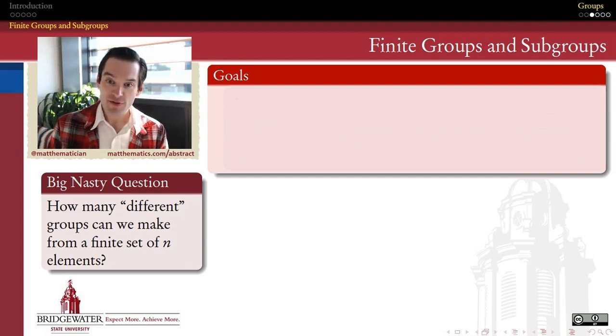And the second question is, if it's true that I can do that, how many different ways could I do that? What kind of choices do I have to make when I put together a group with a finite set of elements? And that is a really big question.